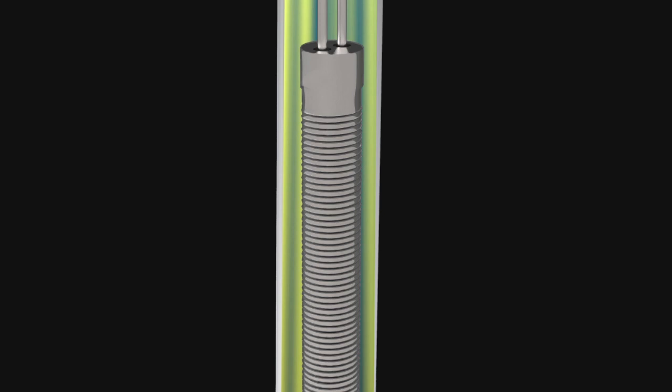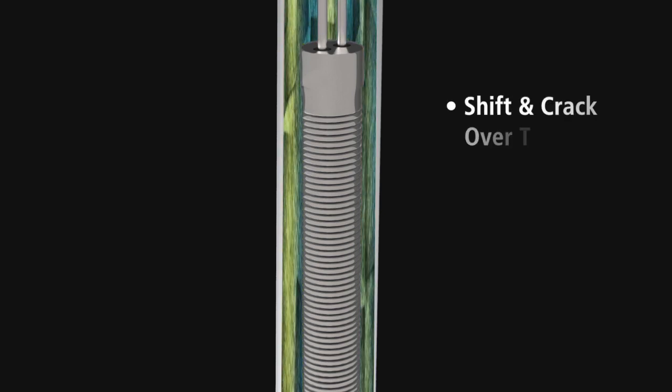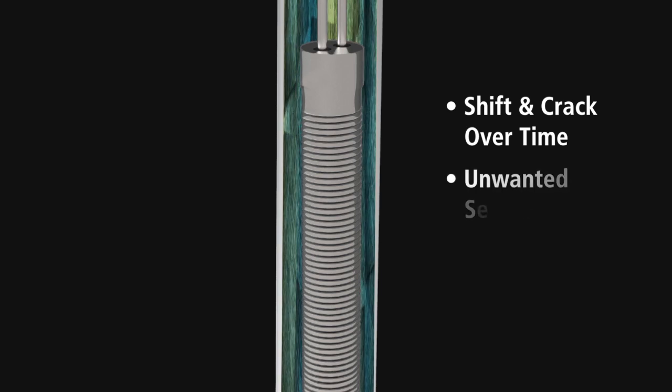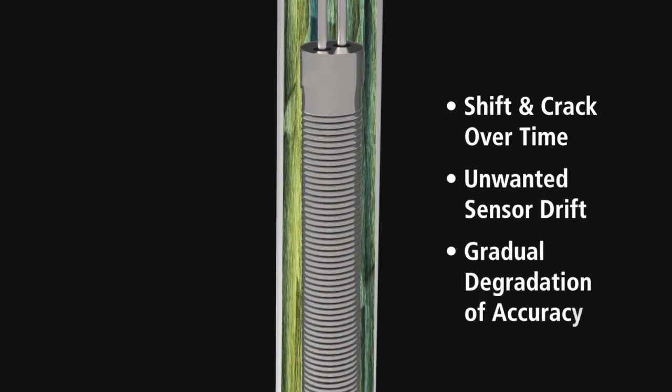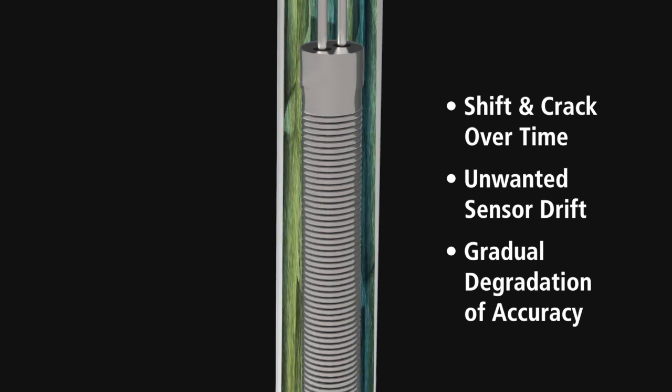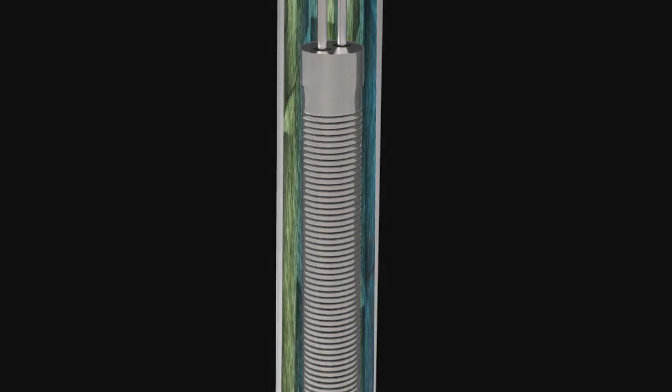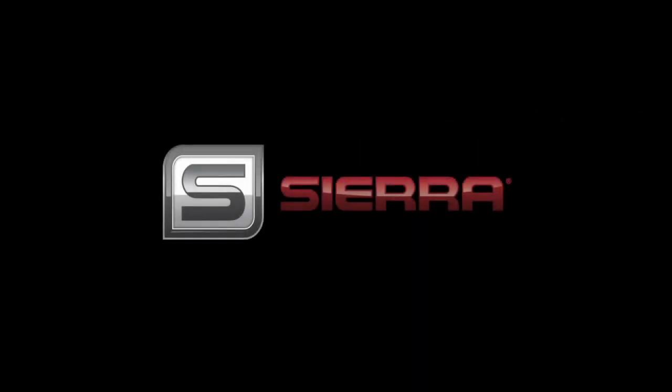Wet thermal sensor design, because of the organic potting cement used, would shift and crack over time, causing unwanted sensor drift, resulting in a gradual degradation of flow measurement accuracy. Today, wet thermal sensors are used by all industrial thermal sensor manufacturers on the market, with one exception, and that is Sierra.